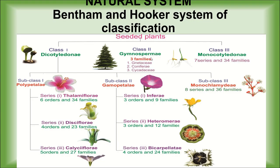Class 2 Gymnospermae plants have naked seeds and include three families: Gnetaceae, Coniferaceae and Cycadaceae. Class 3 Monocotyledonae plants contain only one cotyledon in their seeds, with parallel venation, fibrous root system and trimerous flowers with floral whorls in sets of three. This class has seven series and 34 families. Bentham and Hooker's classification is still in use as the best system because the descriptions of plants are quite accurate and reliable, easy to follow, and used as a key for identification of plants in several herbaria of the world.